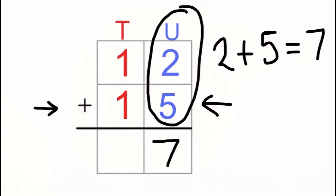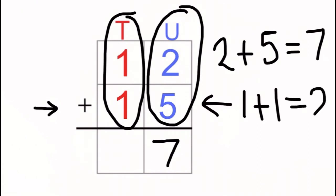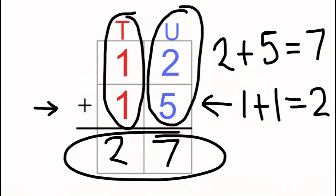Then, we do exactly the same for the tens column. We know for the tens we need to do one plus one which we know is two. And that can go straight into the tens column. We know that the answer to our sum is this number under here. So we know that 12 plus 15 is 27.